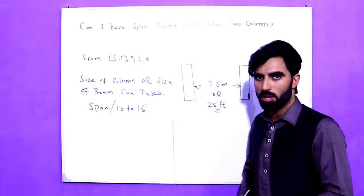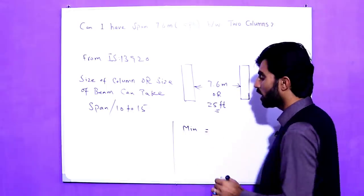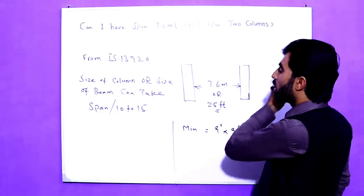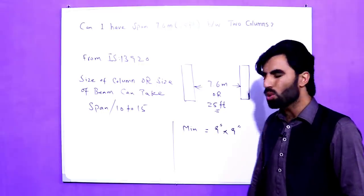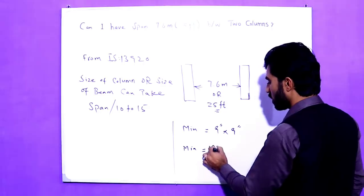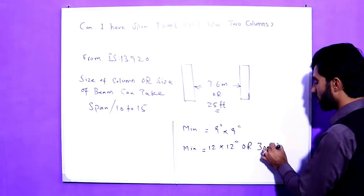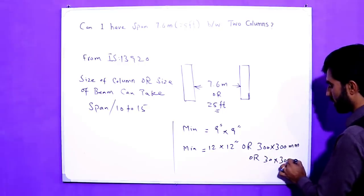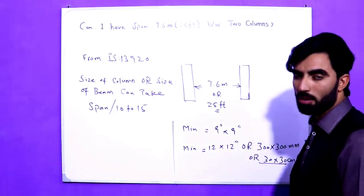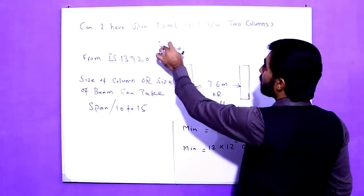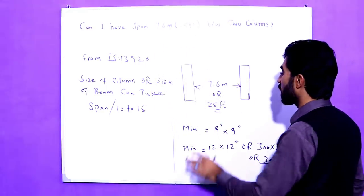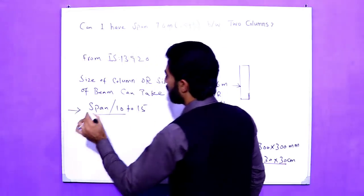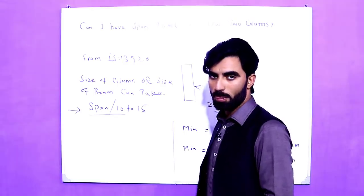I recommend IS 456:2000, which states the minimum size of a column should not be less than 9 by 9 inches. If the span between two RCC columns is more, use a minimum of 12 by 12 inches, or 300 by 300 mm, or 30 by 30 centimeters. This is the minimum size of an RCC column. So, can you have a span of 7.6 meters or 25 feet between two RCC columns? Yes, you can.